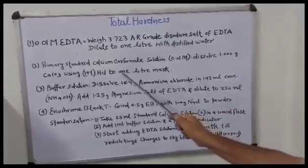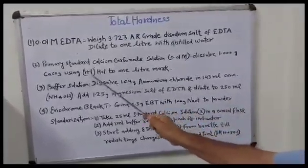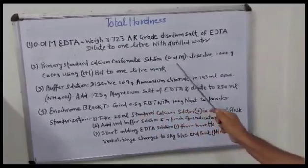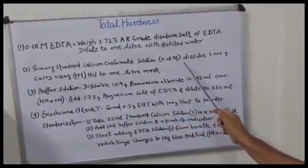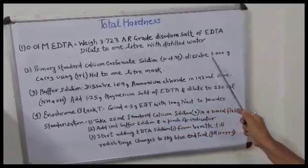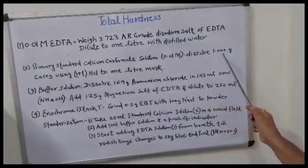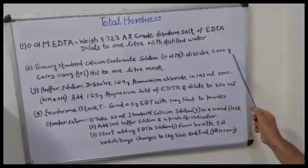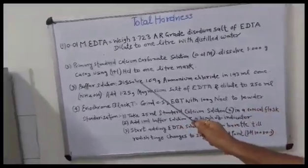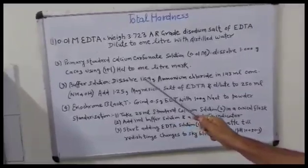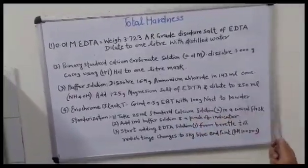We have to standardize EDTA with primary standard calcium carbonate solution, also 0.01 M. For that, dissolve 1.000 gram calcium carbonate using 1+1 HCl, and make up to 1 litre mark.